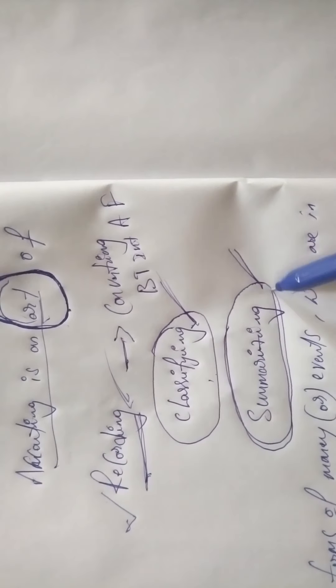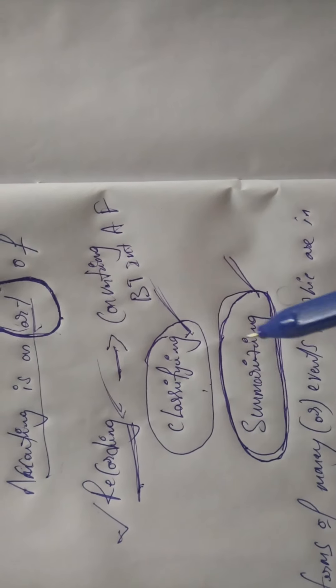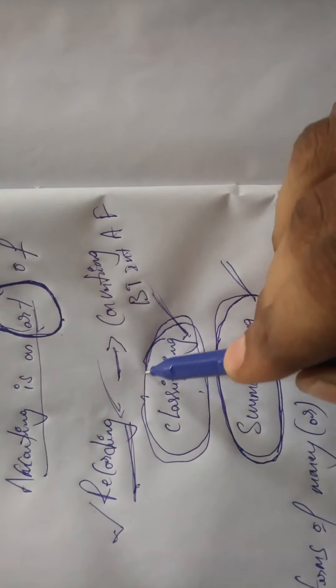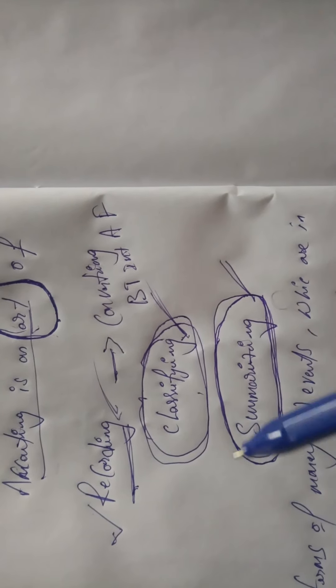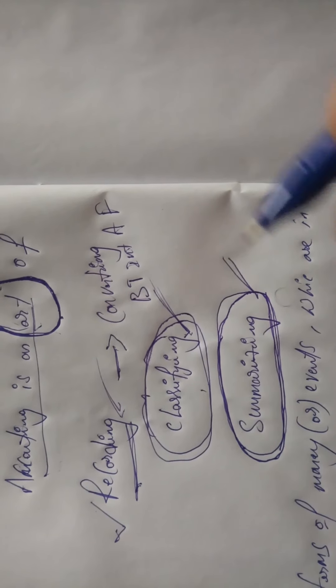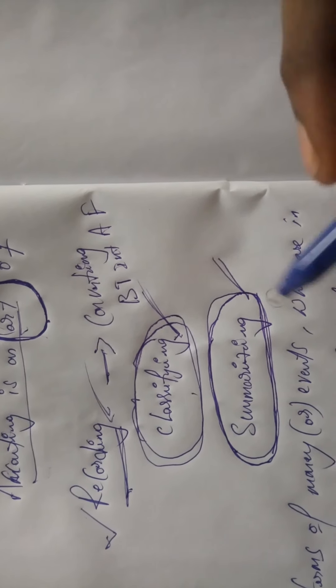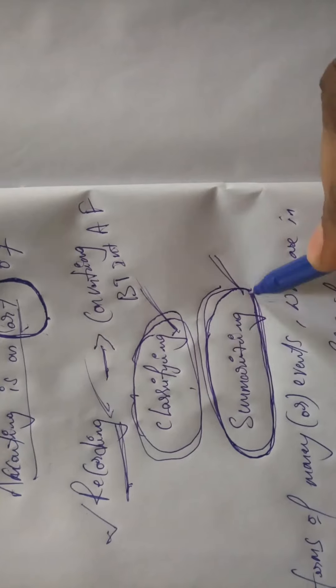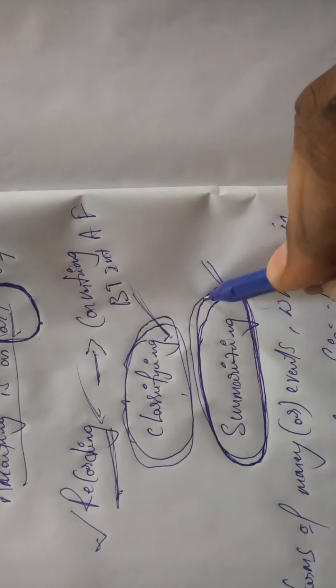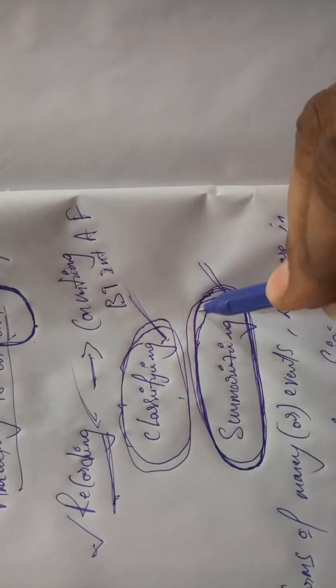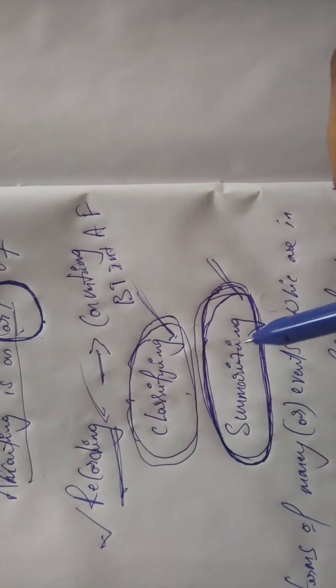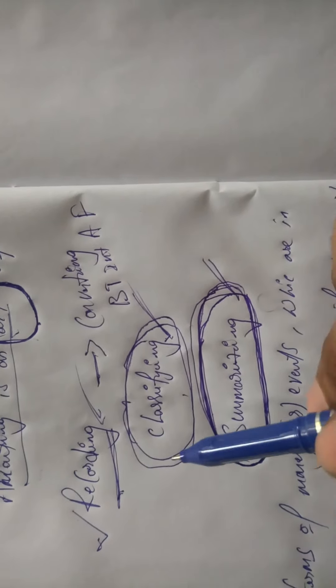Coming to summarizing — this is the final step. Summarizing means we are giving the summary. After classification, we tally all these separated accounts and get a result. That result is nothing but the summary. The summary gives the result of the performance of the business in a particular financial year. These are the three steps we perform in accounting.